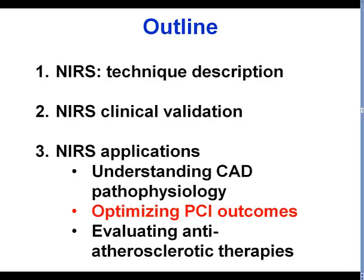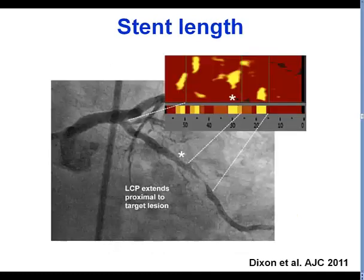The second clinical application of near-infrared spectroscopy is in optimizing the outcomes of percutaneous coronary intervention. Near-infrared spectroscopy can help determine the exact length of the lesion.